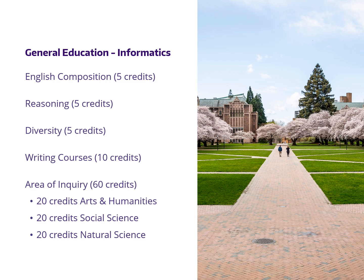For students transferring from a Washington State two-year or community college, it is not required to complete a direct transfer agreement associate degree before you start at UW Seattle. However, if you do, these courses will satisfy most of the general education requirements for informatics. Sometimes students are short one or two requirements, usually in Arts and Humanities or Writing, but those can be completed later with courses already built into the informatics major requirements.